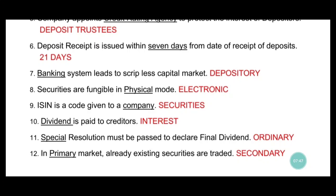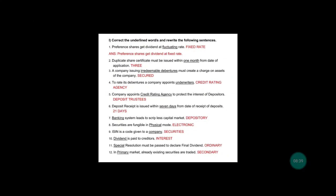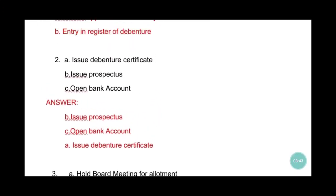Eleventh: special resolution must be passed to declare final dividend. No — dividend is declared every time, so it doesn't require a special resolution. The answer is ordinary resolution: ordinary resolution must be passed to declare final dividend. Twelfth: in dash market, already existing securities are traded — the answer is secondary market. Primary market is when company issues new shares; when already-issued securities are traded, that is the secondary market. So I part is now complete.